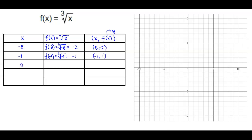Let's go ahead and use 0. We want to find f of 0, where 0 is the input. We want to find the cube root of 0, which means what number do we have to cube to get 0? Well, the answer is 0. So we have 0, 0. The next number is positive 1. We want to find f of positive 1. What is the cube root of 1? That's 1. So we have 1, 1.